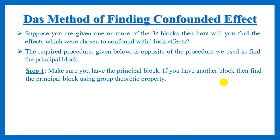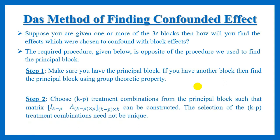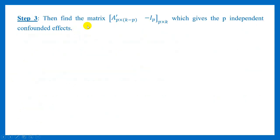After finding the principal block, you have to choose k minus P treatment combinations from the principal block such that if those treatment combinations are expressed digitally and kept one over another, the columns of the matrix can be arranged to give an identity matrix of order k minus P, and the remaining columns will be put together to form the matrix A. Then in step 3 you have to find the matrix A' and -I_P.